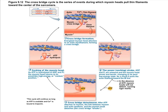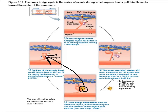As soon as the power stroke happens, ADP plus the free phosphate are kicked off, and myosin immediately binds another ATP. ATP is then hydrolyzed, and we go from this bent-forward structure to the myosin head being cocked back — basically loading the spring. We've transferred chemical potential energy from ATP into mechanical potential energy. As soon as myosin comes back up and binds actin, the spring is released, the myosin head snaps back, and actin is pulled in that direction.